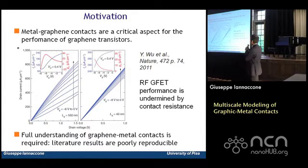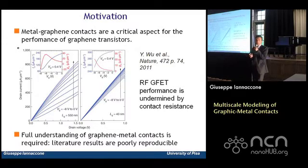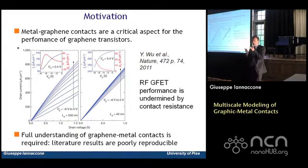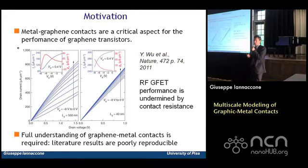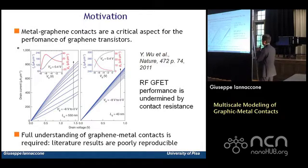This picture shows the output characteristics of a graphene FET fabricated recently at IBM. These output characteristics are very poor, and the reason is that the series resistance of the contacts is too high. This undermines both the achievable voltage gain of the device and the high-frequency performance — Fmax in particular. We also need to fully understand metal graphene contacts because experimental results in the literature are very scattered, as some relevant factors are not fully controlled in experiments.